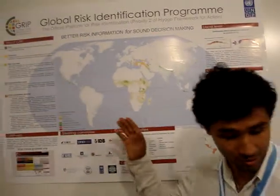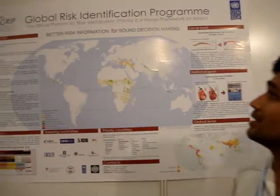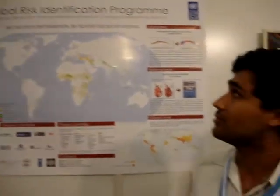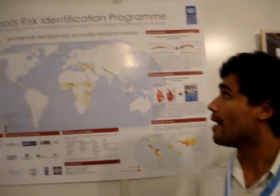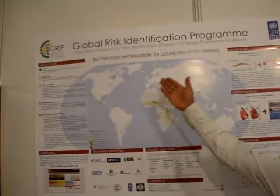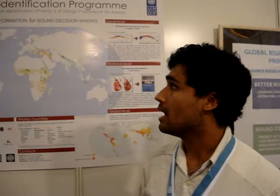I'm going to present to you the Global RICS Identification Program. This is the obstacle platform prior to a Sendai framework of action. Our motto is 'Better RICS Information for Sound Decision Making.' We provide support for RICS assessment at three levels.